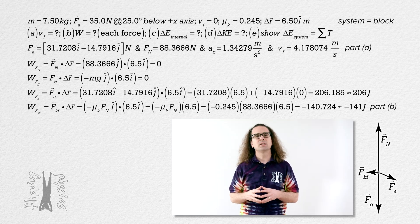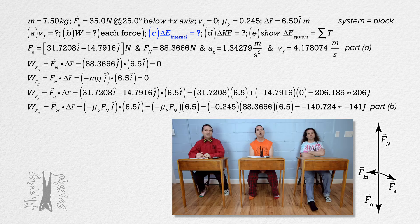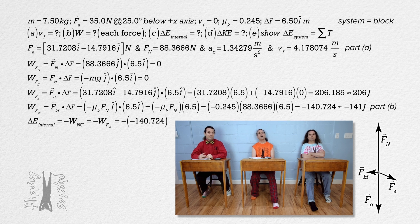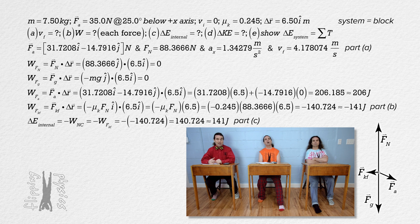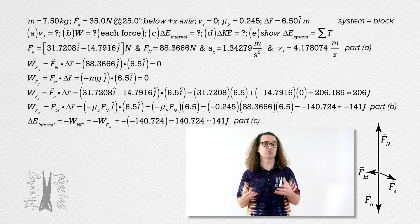Now part C: solve for the change in internal energy of the block. The change in internal energy equals the negative of the work done by non-conservative forces, so it equals the negative of the work done by kinetic friction, which is positive 141 Joules. It is easy as long as you remember that the work done on a system by non-conservative forces goes into the system as internal energy.